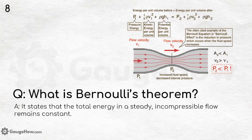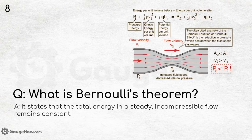What is Bernoulli's theorem? It states that the total energy in a steady incompressible flow remains constant. The formula is: P plus half rho V squared plus rho g H equals a constant, where P stands for pressure energy, half rho V squared stands for kinetic energy per unit volume, and rho g H stands for potential energy per unit volume.